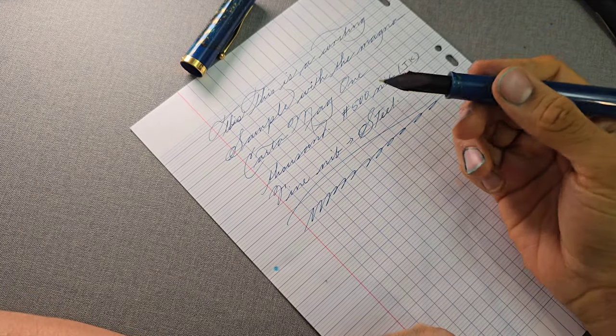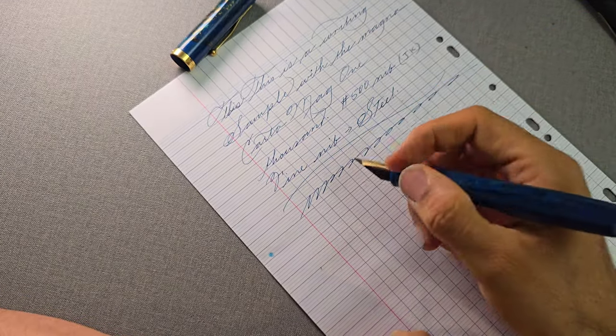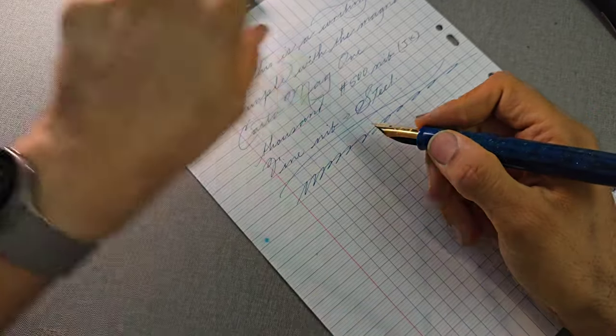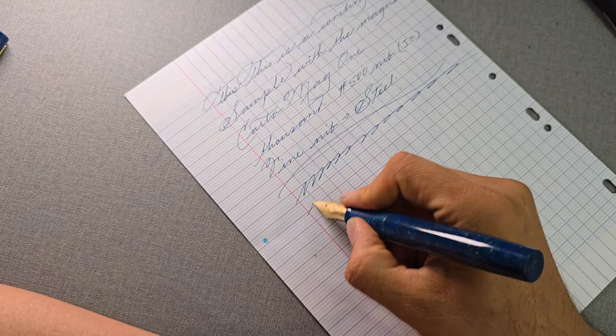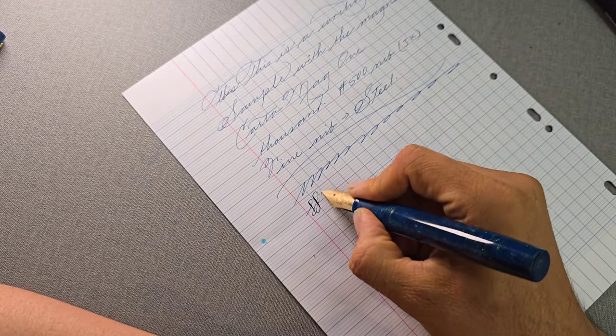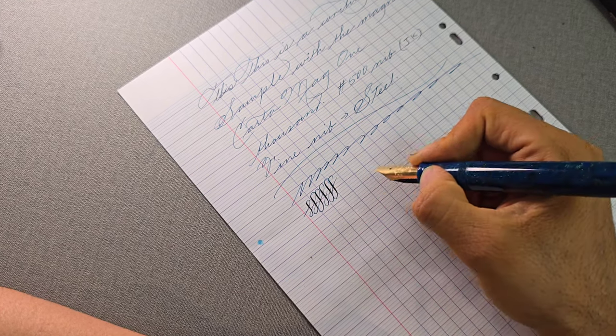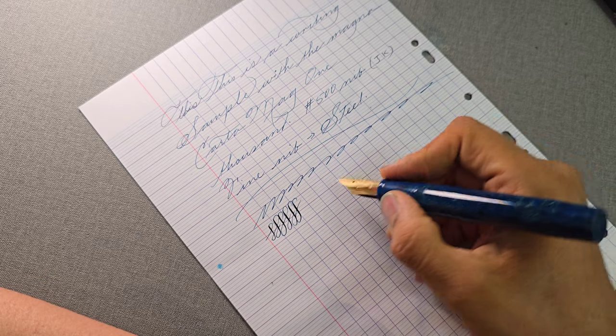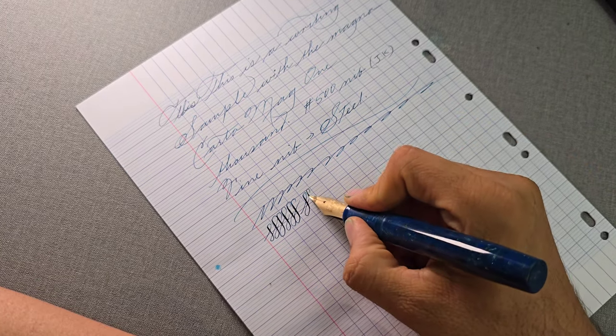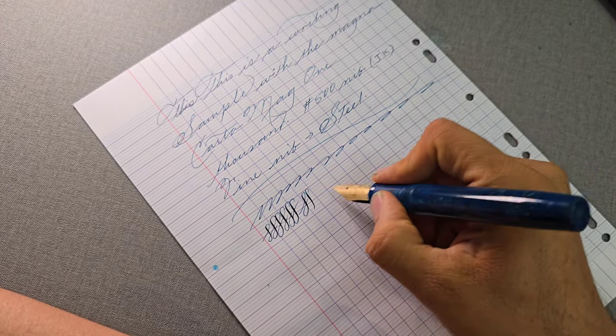So this pen, it seems like it doesn't have any issues keeping up with that fine nib. It has zero problems keeping up with writing. It is a little bit bouncy. It's not a flex nib by any means like the mag 600, but you can see that you can get quite a bit of line variation if you want to push it. I wouldn't do that because it may not bounce back all the time, so I'll stop it right there.